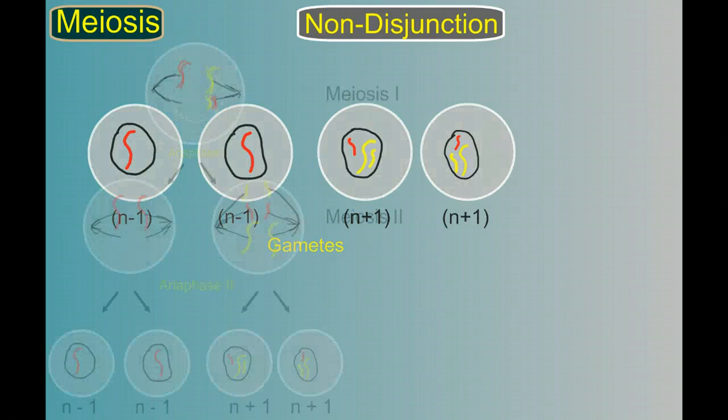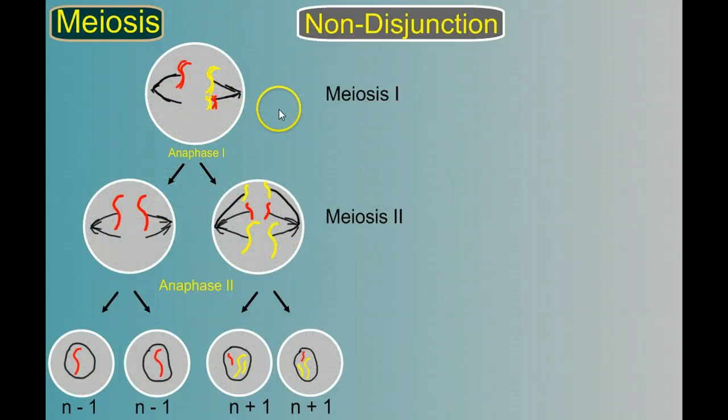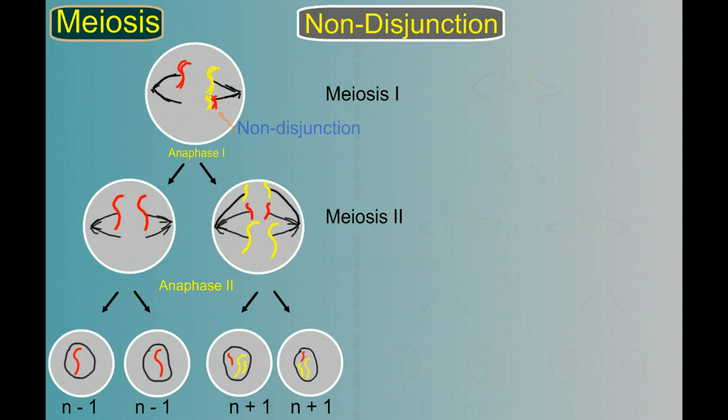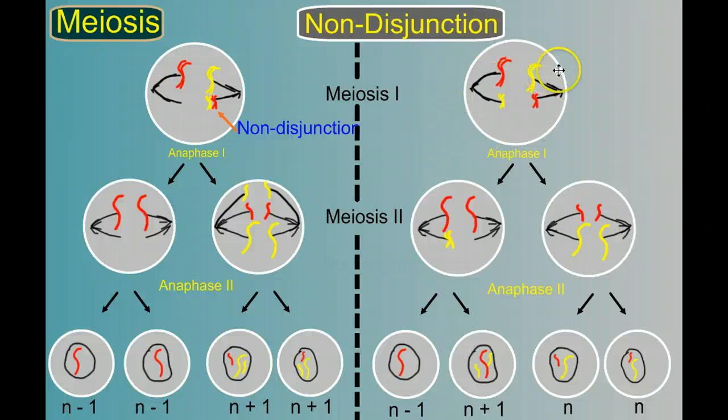So we can summarize the process here. We see the non-disjunction event in meiosis I. It's right there. But what happens if the non-disjunction event happens later? We can see here in meiosis I, at the first anaphase, we have the proper disjunction of the chromosomes. But what if it happens here at anaphase II? Well, the only difference is we end up with two of the gametes that have properly formed haploid, and one that's N plus one missing a chromosome, and one that's N minus one missing a chromosome, and one that's N plus one.